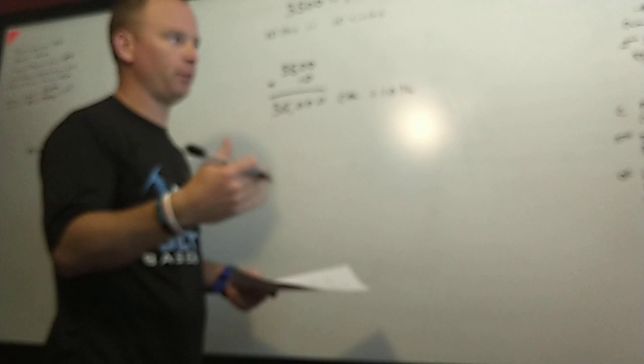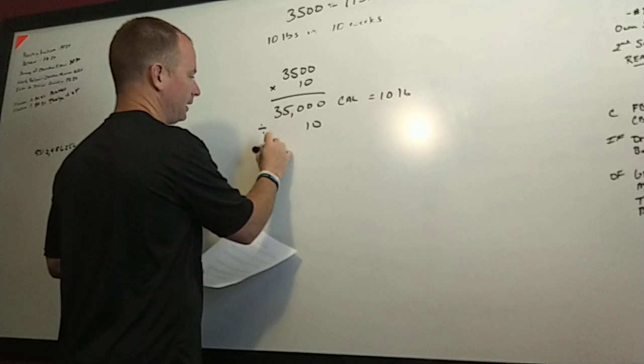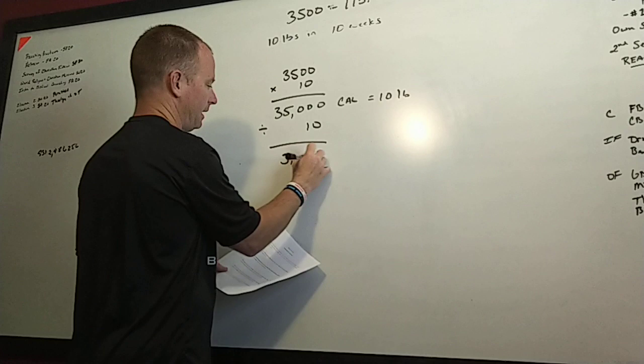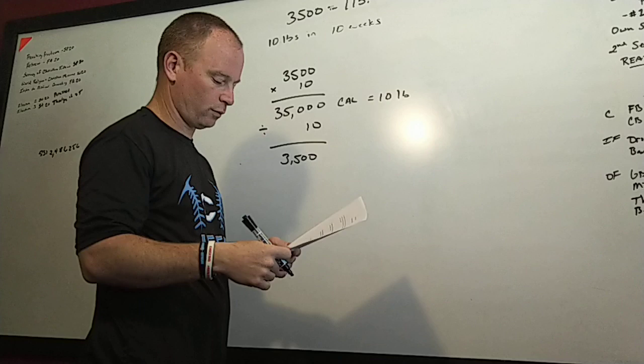We know that Ruth is going to have to have a 35,000 calorie deficit over the course of 10 weeks. What would her calorie deficit have to average per week in order for her to reach her goal? Every week how many calories is she going to have to be at a deficit to reach her goal after 10 weeks? We take 35,000 and divide it by the 10 weeks. That brings us right back to where we started: 3,500 calories.